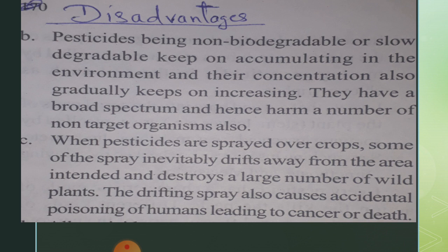However, pesticides are broad spectrum and affect a number of non-target organisms in the environment. When pesticides are sprayed over crops, some of these reach different areas. This destroys a large number of plants and different species, and causes accidental poisoning of humans, related to cancer and death.